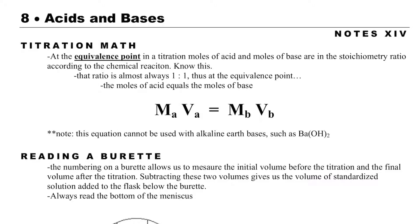In this video, we will discuss how to solve titration math. A titration is used to figure out the concentration of an unknown. With acids and bases, the ratio between the acid and the base is generally always one to one.